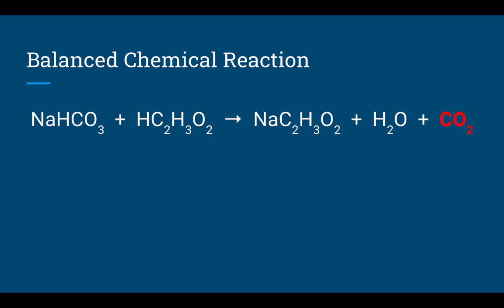Now let's look at the actual reaction. We start with NaHCO₃ — sodium bicarbonate, or baking soda. Depending on the procedure, you'll either weigh out a specific sample or measure a certain number of teaspoons and calculate the mass. We're combining that sodium bicarbonate with acetic acid — vinegar. Each trial uses approximately one cup of vinegar placed into a reaction vessel. The amount isn't critical since vinegar is not our limiting reactant.